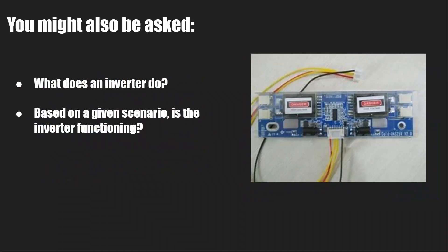By shining a flashlight on the screen, you're simply illuminating the content that is there — that's why that test works. If you have a black screen and shine a flashlight and can see content, it's a safe bet the inverter has failed. You might also be asked what an inverter does — it converts AC power to DC power — or given a scenario, whether the inverter is functioning or something else is faulty.